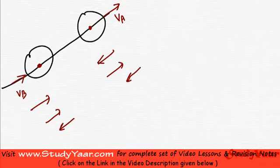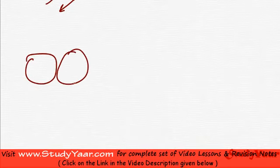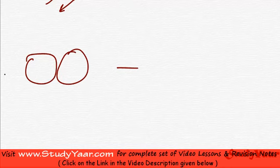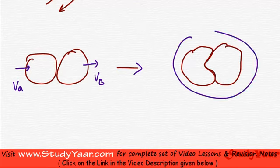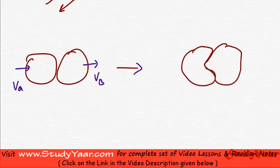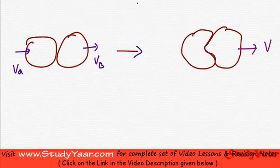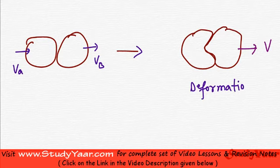Now let's understand what happens when we have an impact. There are basically two phases in an impact. In the first phase, you have deformation. So if over here you have VA and VB, these two bodies get deformed. In this phase these two act as one body and they together move with a speed called V. This is known as your phase of deformation, or period of deformation.